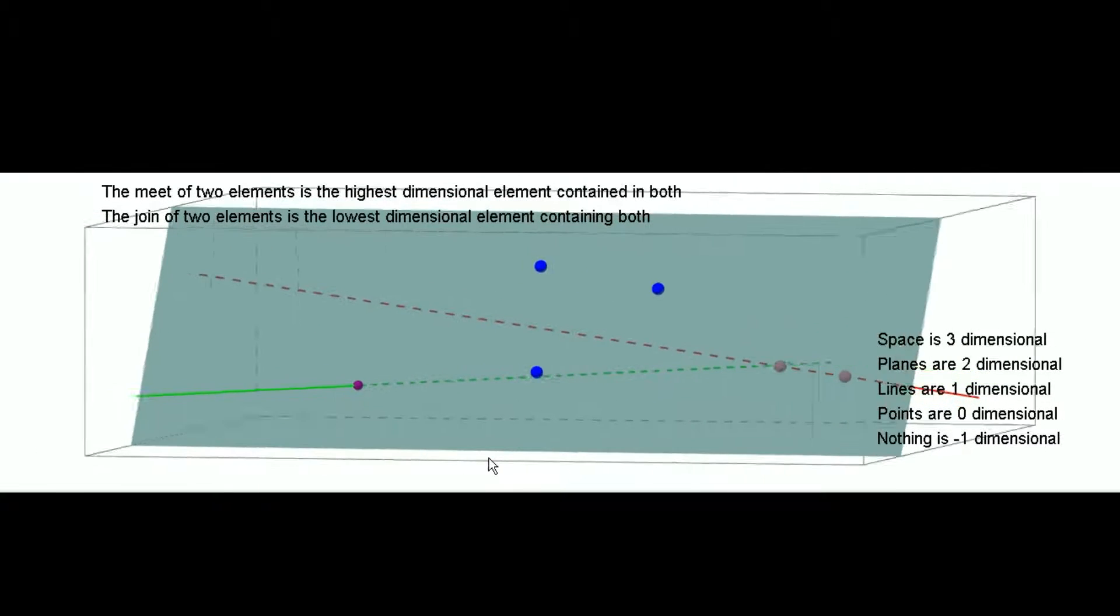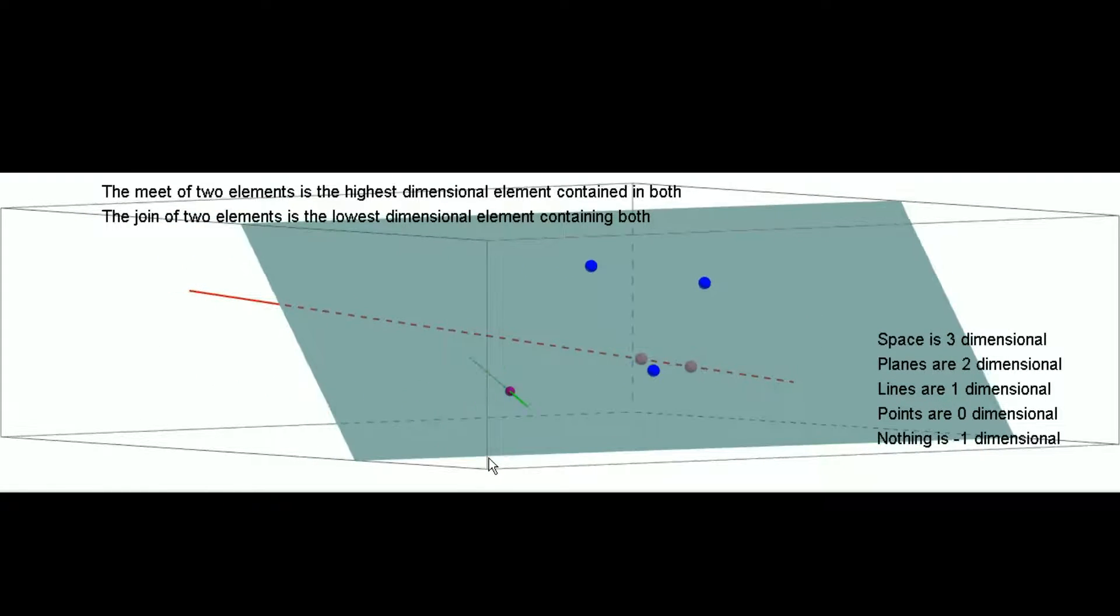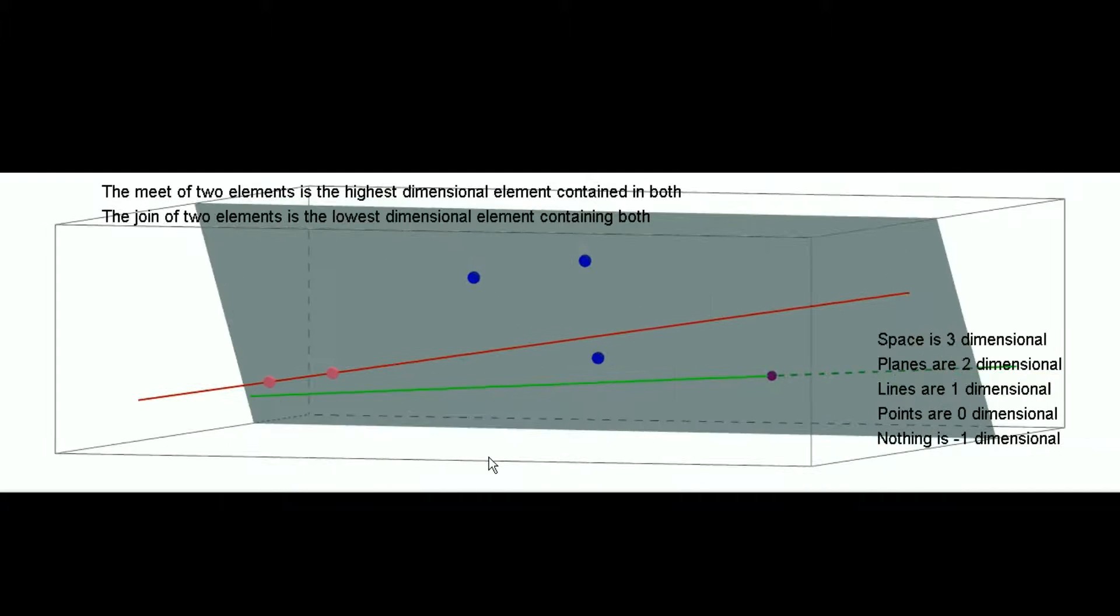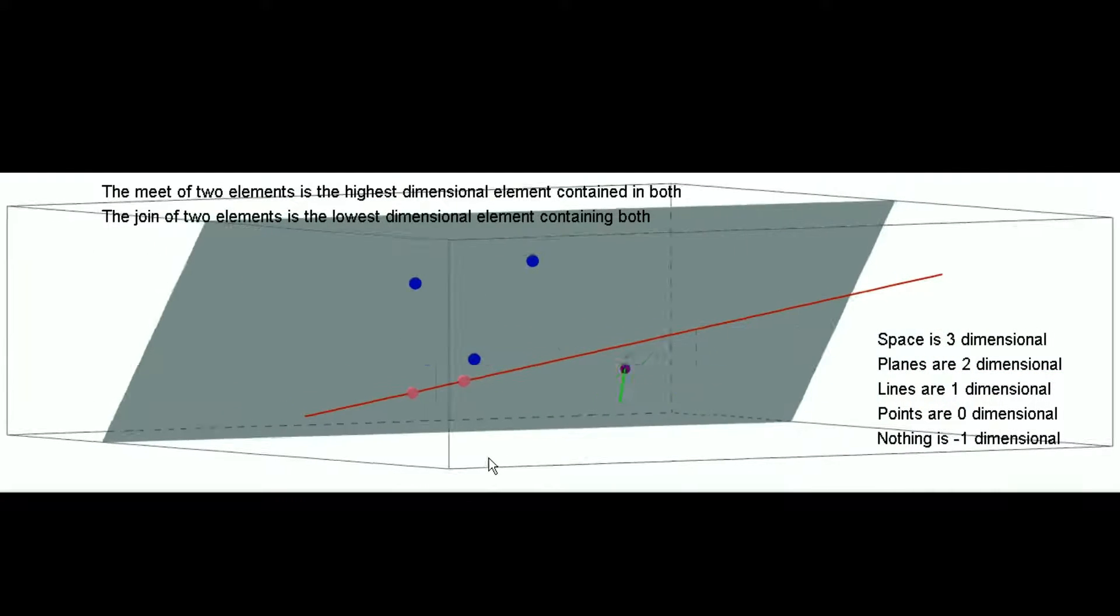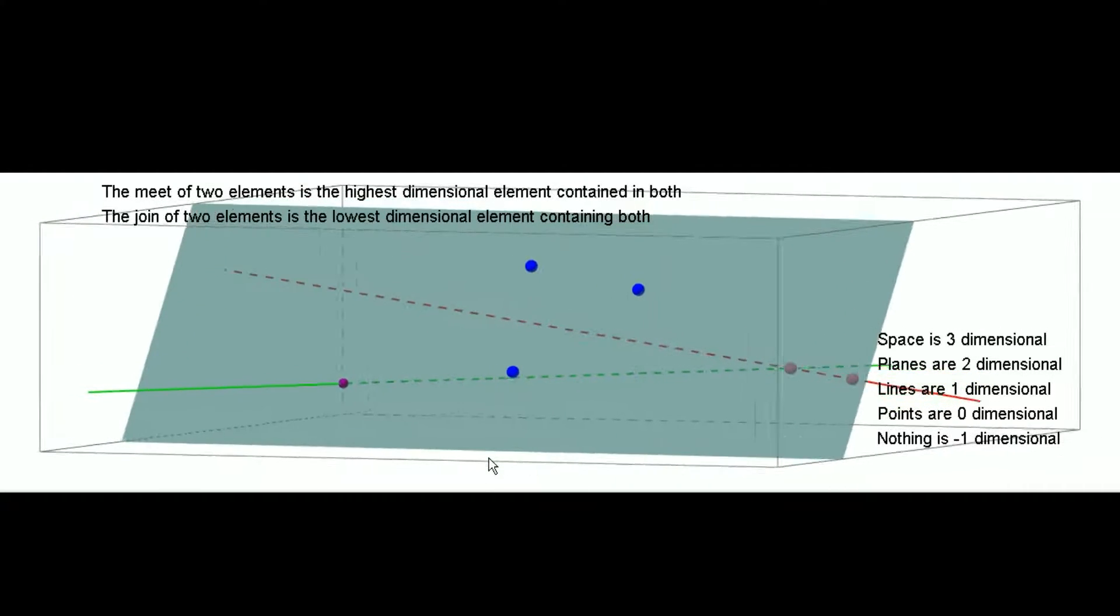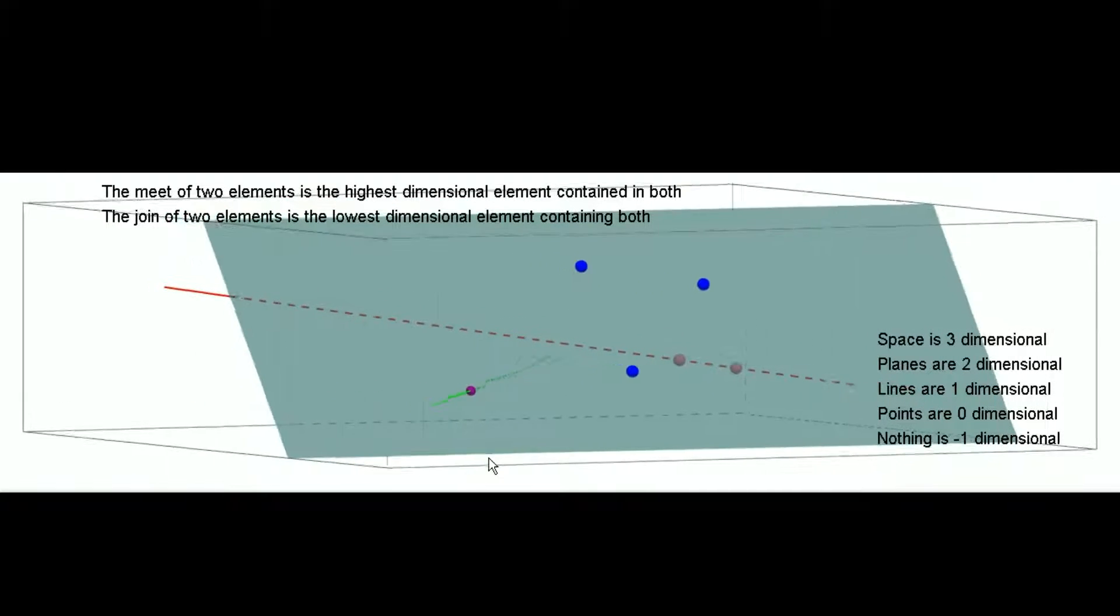So, in order for these two operations to always return another element, we need to include the idea of elements at infinity. So, we're going to think of points at infinity, lines at infinity, and even planes at infinity.